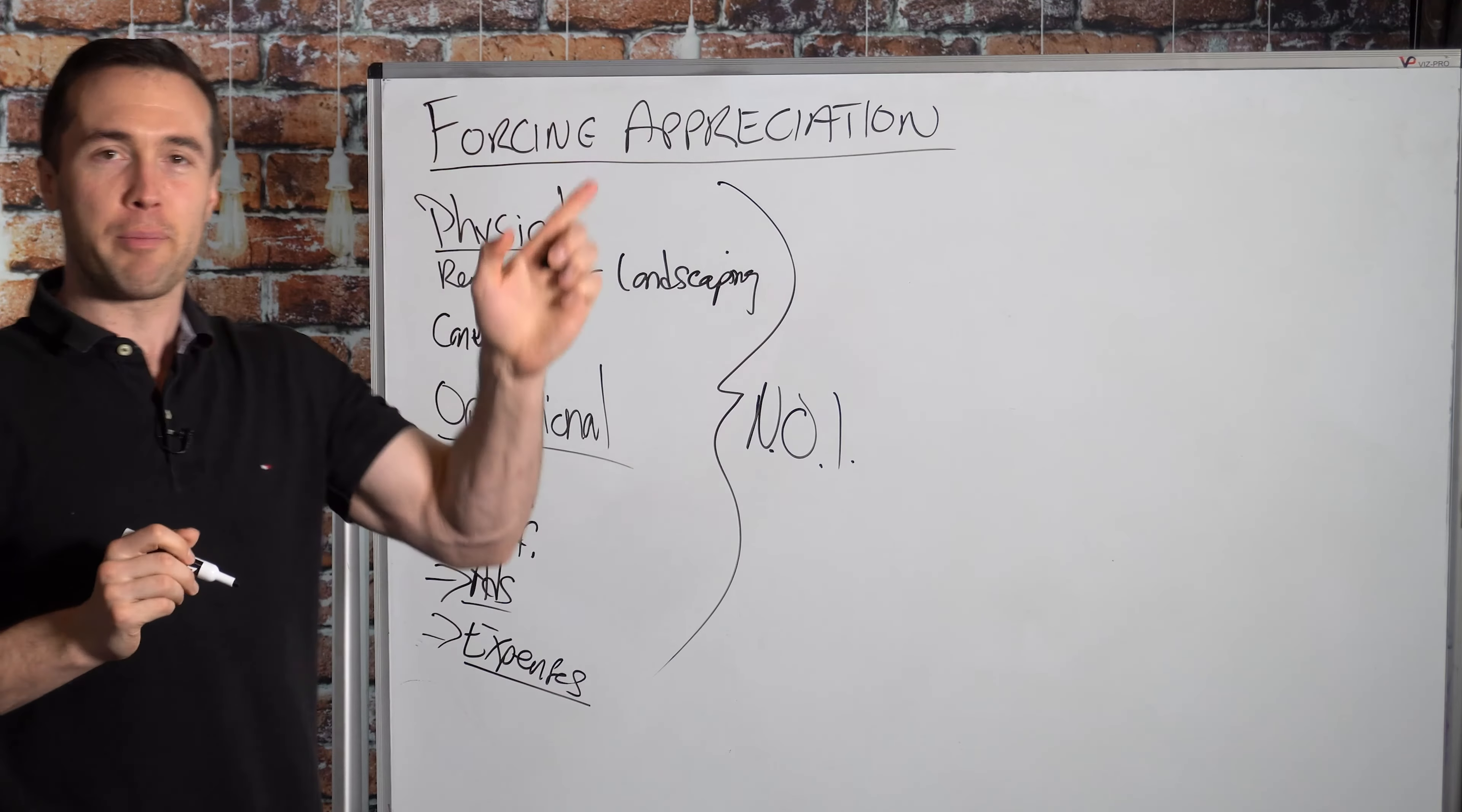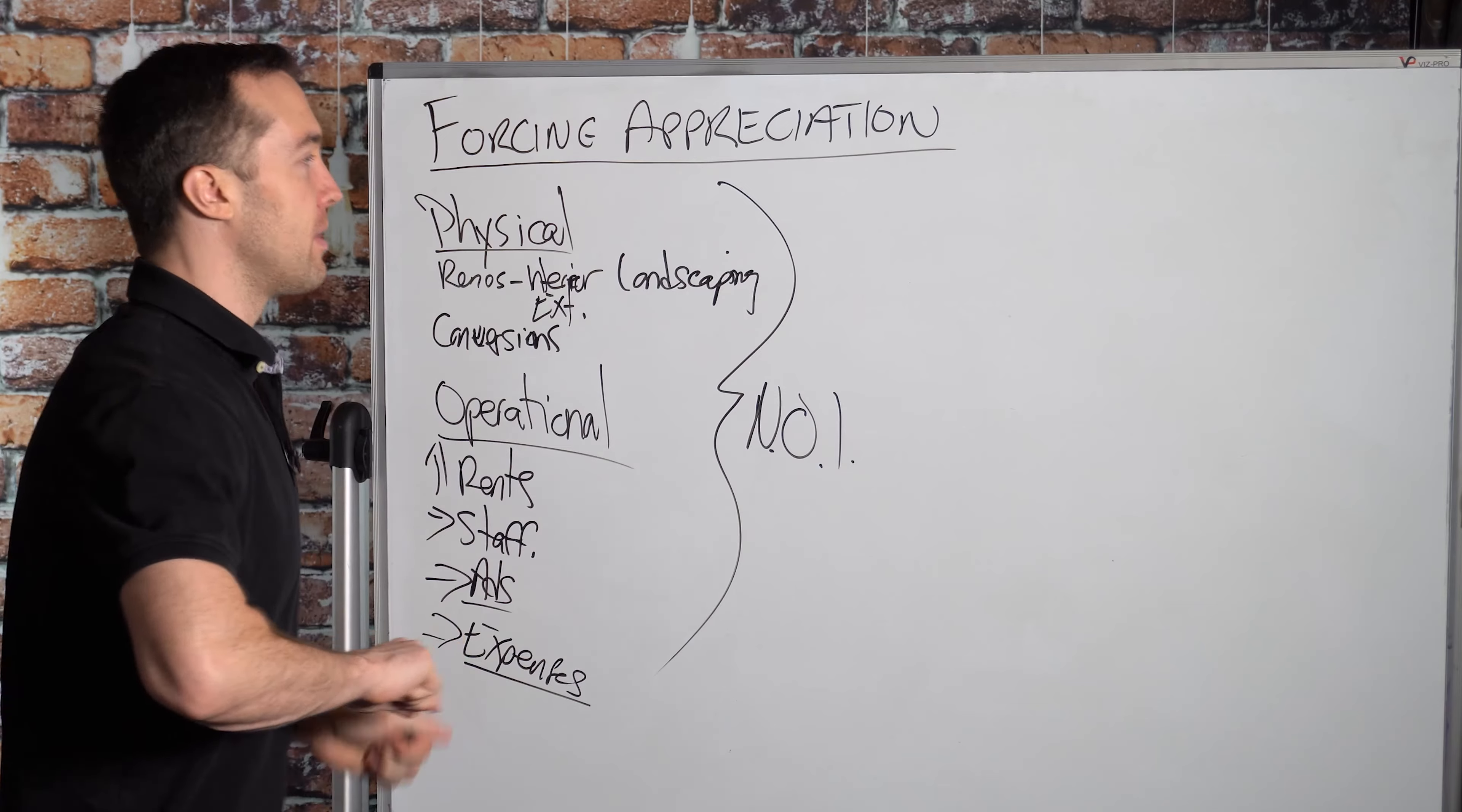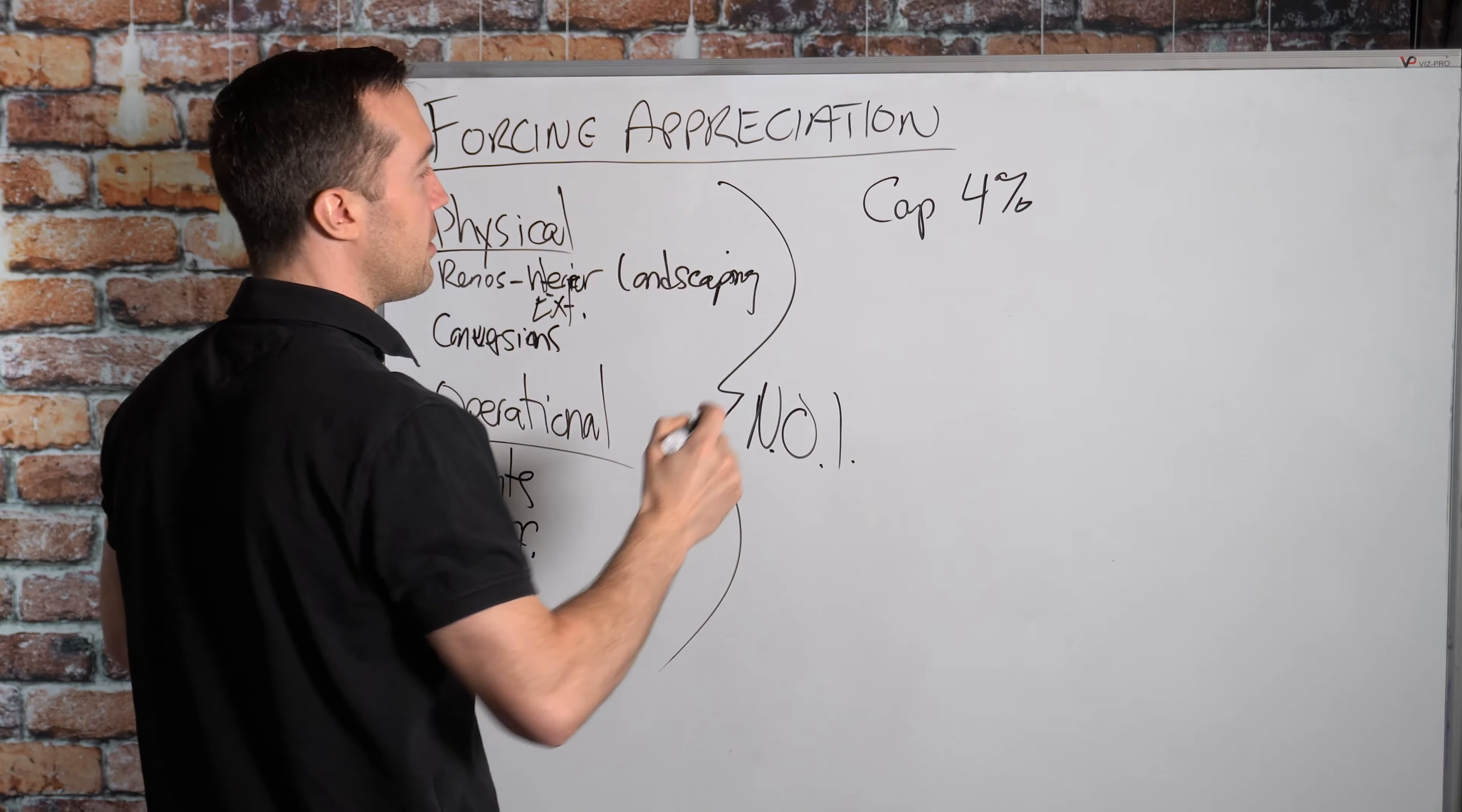And I'll put a link right up here to a video I did going more in depth into the value add strategy, because this is just kind of a surface level thing. Now, what sort of impact does increasing the NOI have on the value of the property? I want to run through an example with you. So let's say the market cap rate is 4% just to keep things nice and simple. I'll do a link right up here to a video I did explaining all about cap rates, so you can check that out. So we'll do a market cap rate of 4%.